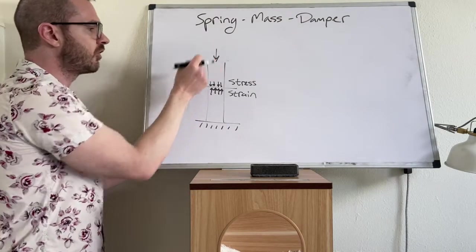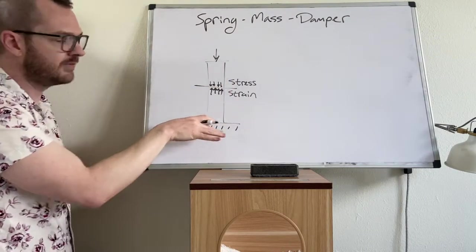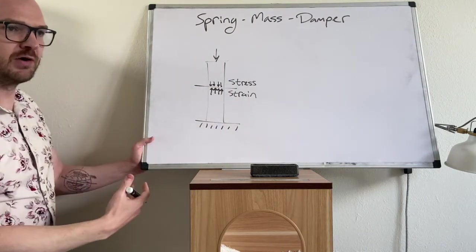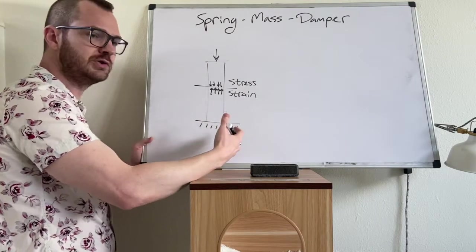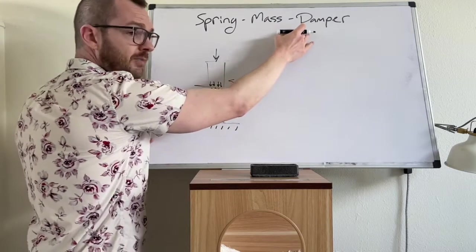Also if you were to strike this support column there would be vibrations that pass through it and there's energy associated with those vibrations. That energy will eventually be lost due to internal friction which we're going to model with a damper.